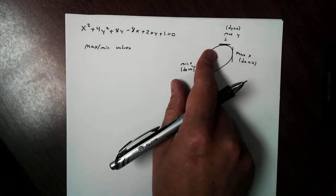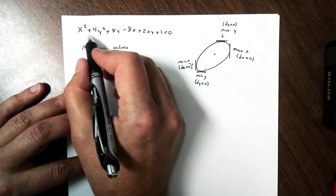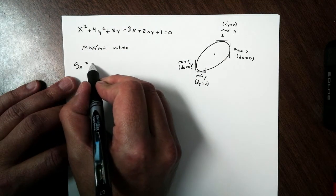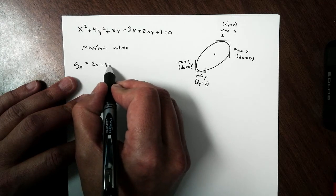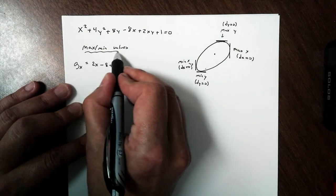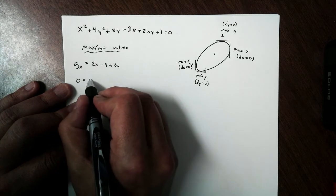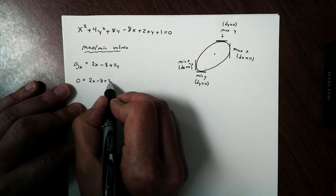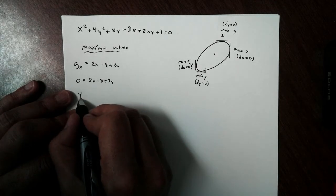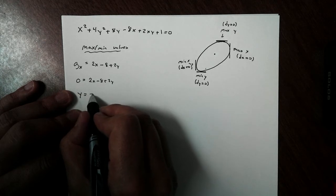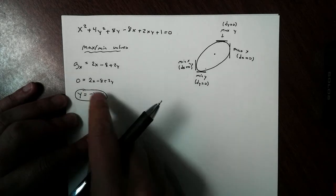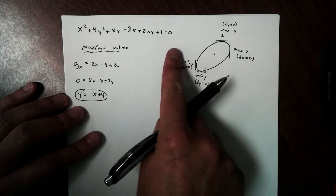We are obviously going to need our partials again. That's where we take our derivative. If I find my partial with respect to x, that's going to be 2x minus 8 plus 2y. Because I'm looking for maximum and minimum values, I would get that equal to 0. So we would get 2x minus 8 plus 2y equal to 0. I can solve for y here pretty nicely. y becomes negative x plus 4. So this point is going to solve for my maximum in my x direction.